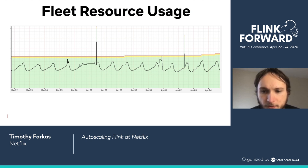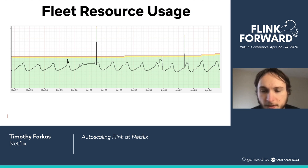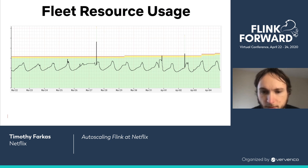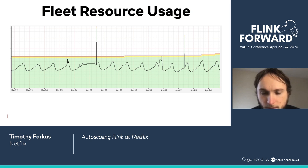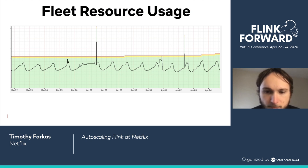A graph showing total resource usage of our router fleet in a particular region shows that every day the entire fleet scales up for peak traffic and scales down during the lowest traffic hours. We've seen really good efficiency gains — depending on the region and time, we've reduced resource usage by 25 to 45 percent. It's also significantly improved our on-call; we rarely get paged for router issues now.